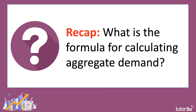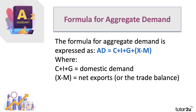We've come to the end of quite a long series of videos on aggregate demand — I hope you found it useful. Quick recap: the formula for calculating aggregate demand is C plus I plus G plus X minus M. C plus I plus G is domestic demand; X minus M is net exports, which we've just covered. If you really understand your aggregate demand, you'll do extremely well in any macroeconomics question. There'll be another playlist focusing on aggregate supply on our YouTube channel.